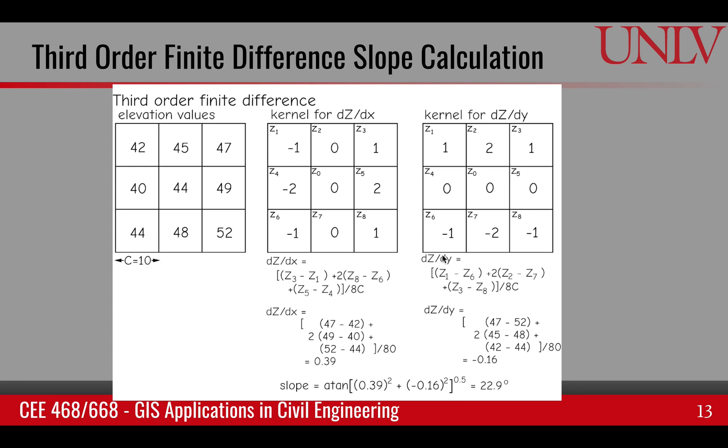Similarly, if we look at the north-south direction or y-direction slope, then we are taking simple difference between the corner pixels and twice the difference between the north and south pixels. And again, all of these values are added. And in this case, because there are one, two, and another two, four differences, we divide it by eight times the cell size in both of these cases.